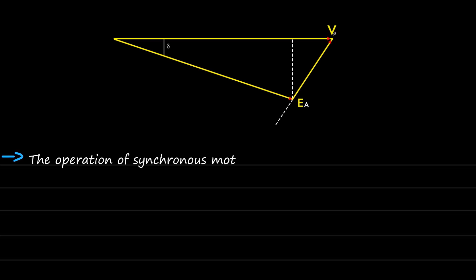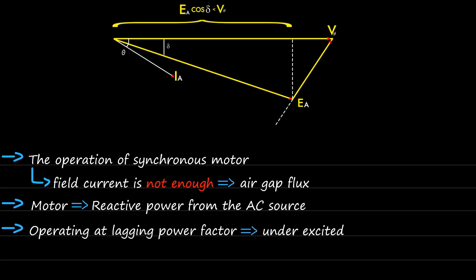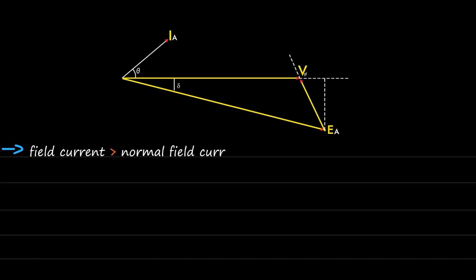From the discussion, we can summarize the operation of synchronous motor as: when the field current is not enough to produce the required air gap flux, the motor begins to draw reactive power from the AC source and is said to be operating at lagging power factor, and thus said to be underexcited.